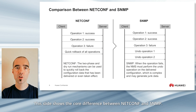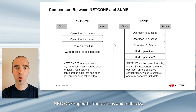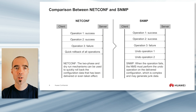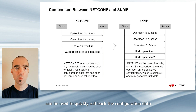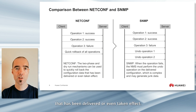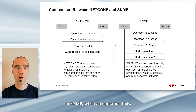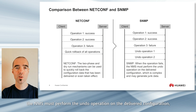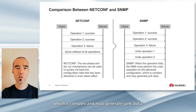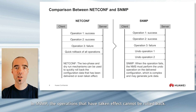This slide shows the core difference between NETCONF and SNMP. NETCONF supports transactions and rollbacks, while undo operations in SNMP are done individually. NETCONF two-phase and dry run mechanisms can be used to quickly rollback the configuration data that has been delivered or even taken effect. In SNMP, when an operation fails, the NMS must perform the undo operation on the delivered configuration, which is complex and may generate junk data. In SNMP, the operations that have taken effect cannot be rolled back.